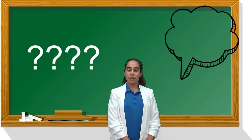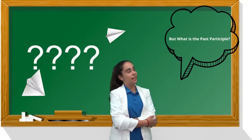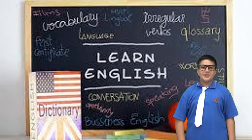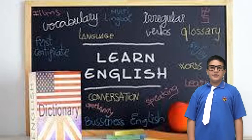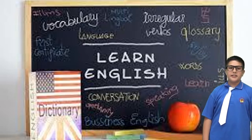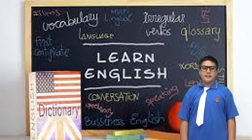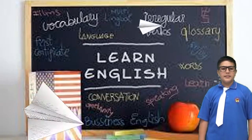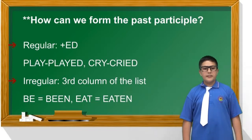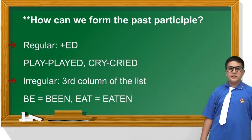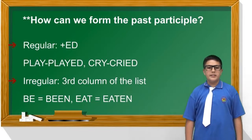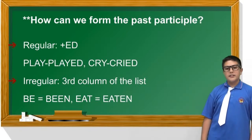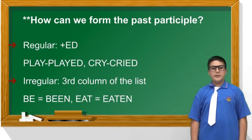But what is the past participle? My name is Iker and like all my classmates, today I am an English teacher. We can find the past participle in the third column of the list when it's irregular. When it's regular, we add 'ed' to the verb. It's very easy.